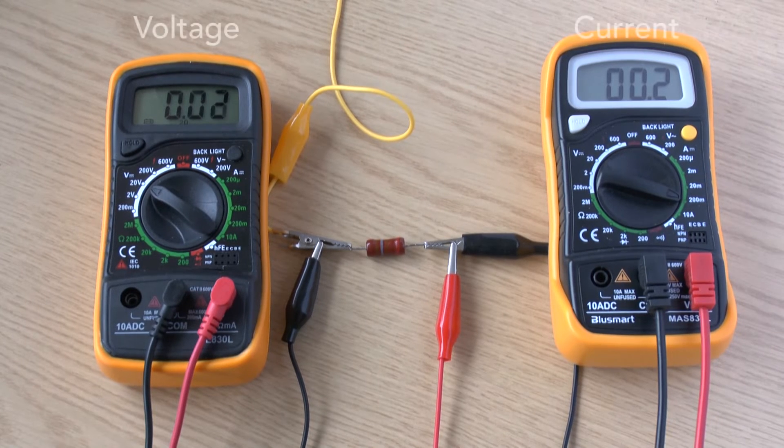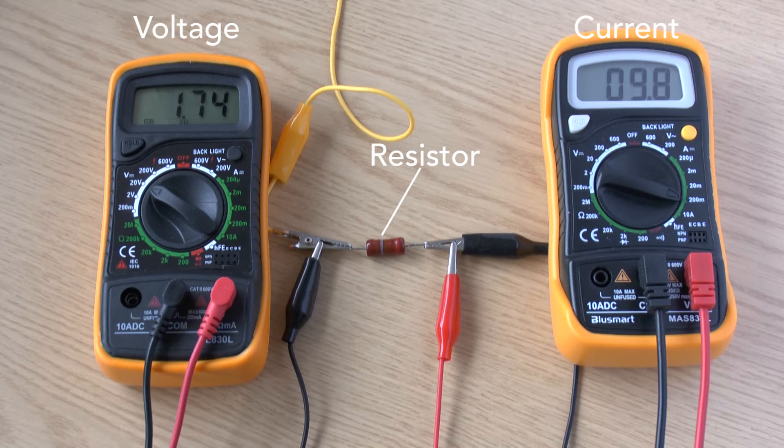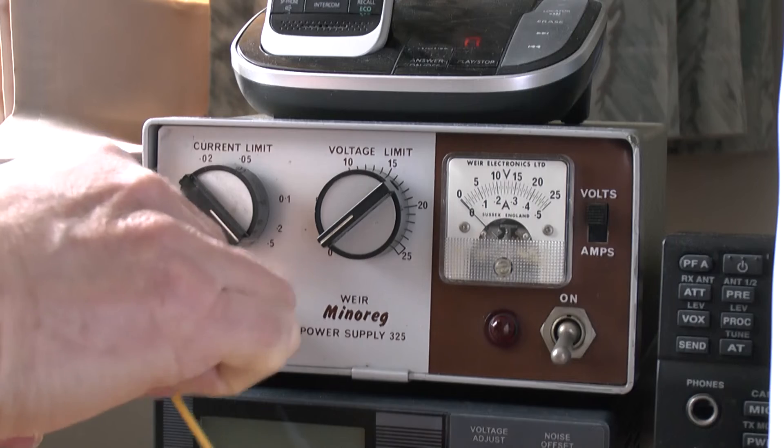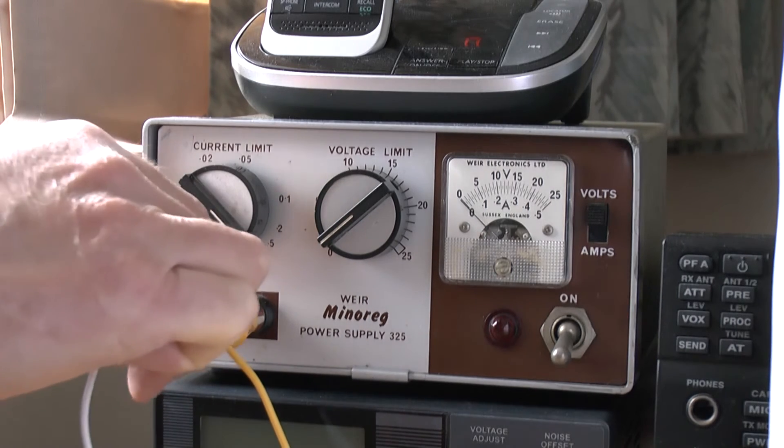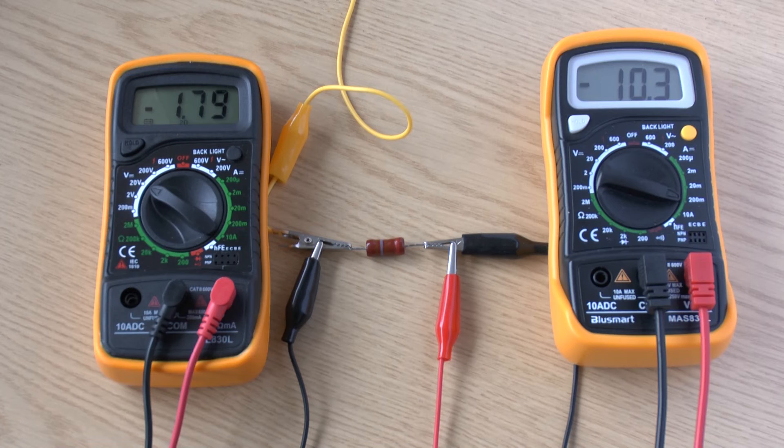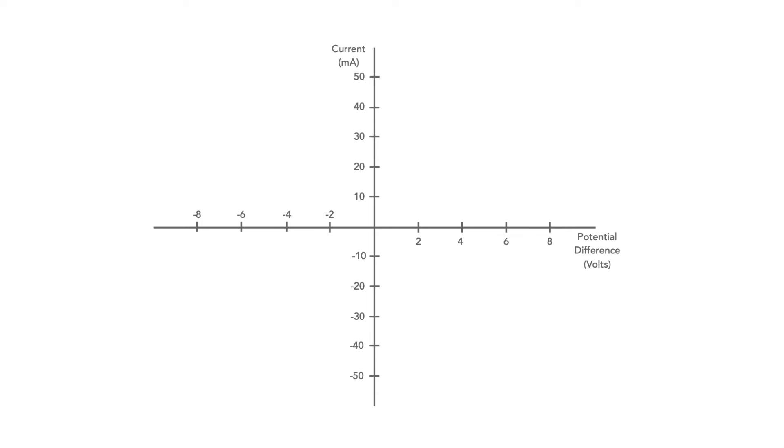We set up the circuit and then measure at zero volts, then move up to two volts, then four volts, six, and then eight volts. Then we reverse the input supply because it's possible the resistor could have a different characteristic if the potential difference polarity is reversed. Again we measure at two volts, four volts, six volts, and then eight volts.